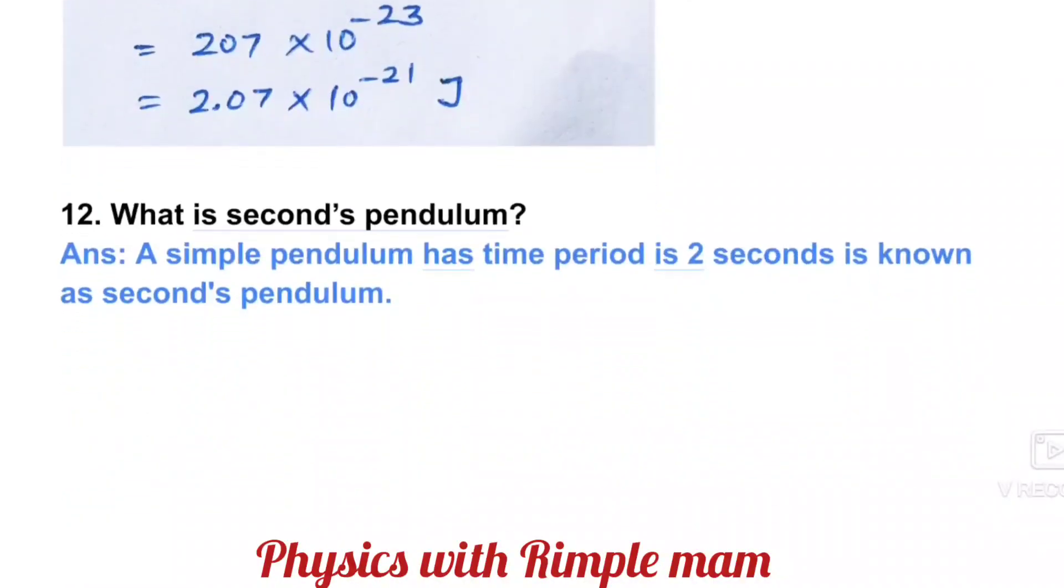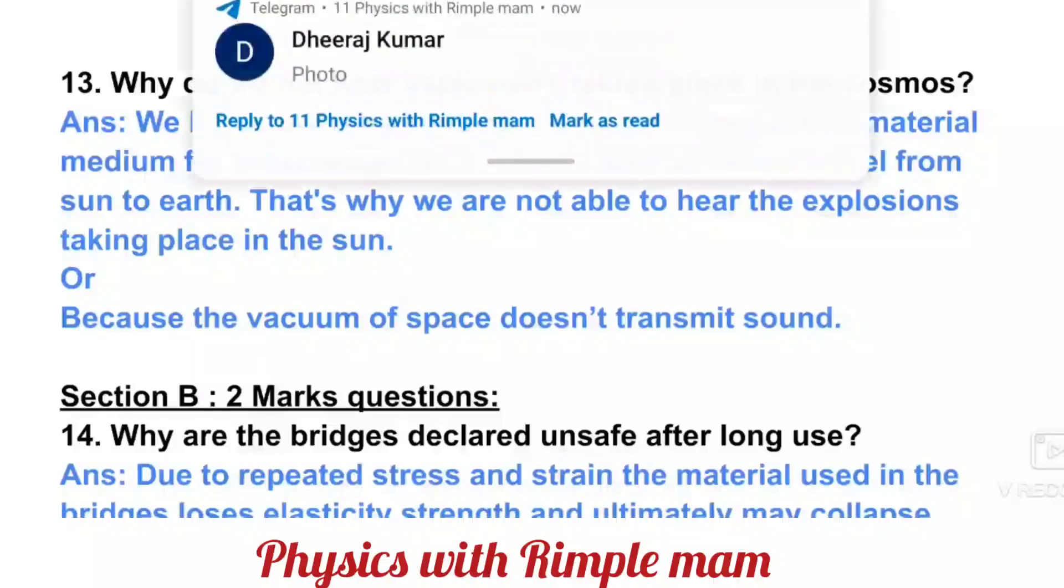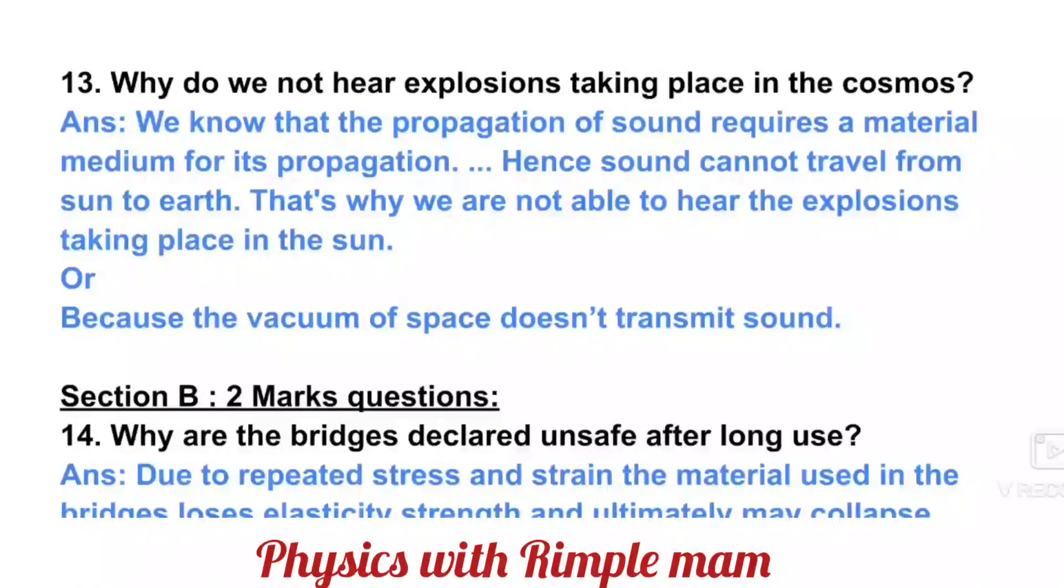When energy is distributed in degrees of freedom in any dynamic system, dividing into equal parts, that's called the law of equipartition of energy. Next: What is the value of energy absorbed by each degree of freedom if temperature is 300K? The formula for energy absorption is E = ½kT. The value of k is given as 1.38 × 10⁻²³ and temperature T is 300 Kelvin. Just calculate it and you'll get your answer. Next: What is a simple pendulum? A simple pendulum has a time period of 2 seconds.